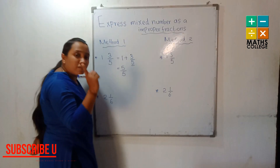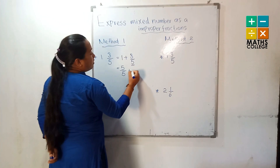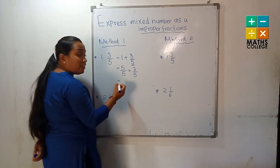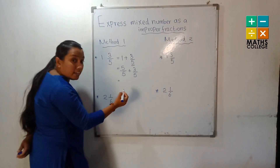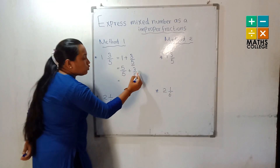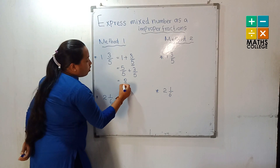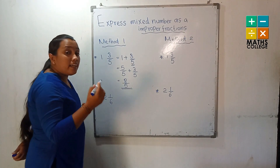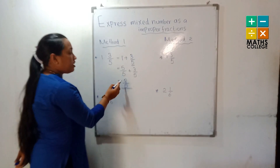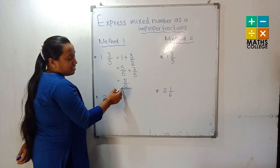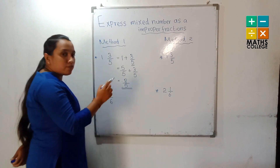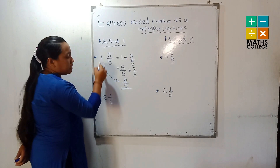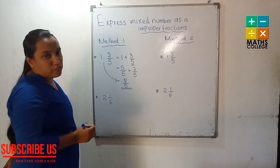One can also be written as five upon five. Five upon five equals one. Then add the two numerators: five plus three equals eight. The result is eight upon five — this is an improper fraction because the numerator eight is greater than the denominator five. This is the improper fraction, and one and three-fifths is the mixed number.